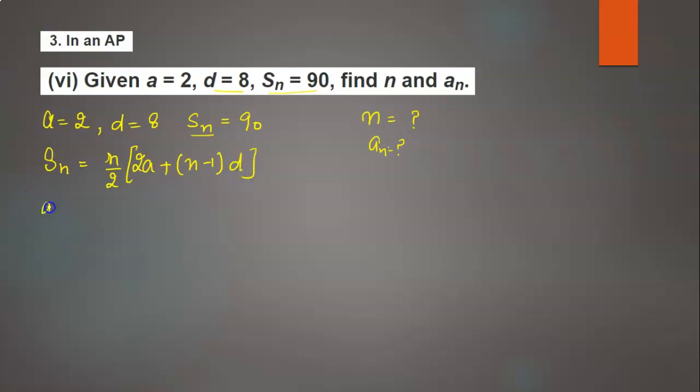Sn equals n over 2 times [2a plus (n minus 1) times d]. So Sn is 90 equals n over 2 times [2 times 2 plus (n minus 1) times 8].